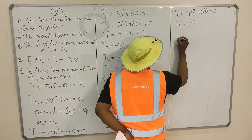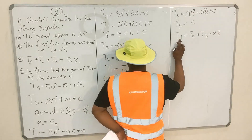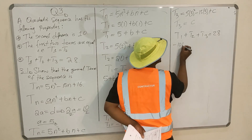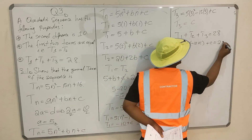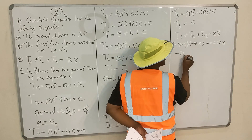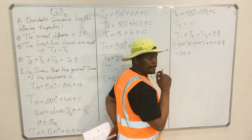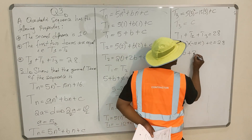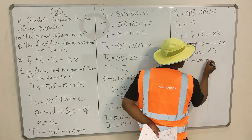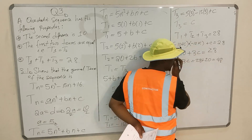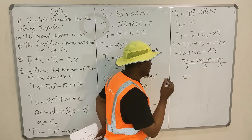You're told that if you add term 1, term 2, and term 3 it should give you 28. Term 1 is minus 10 + C, term 2 is minus 10 + C, and term 3 is C. So: (minus 10 + C) + (minus 10 + C) + C = 28. That gives minus 20 + 3C = 28. Then 3C = 48. Divide by 3: C = 16.